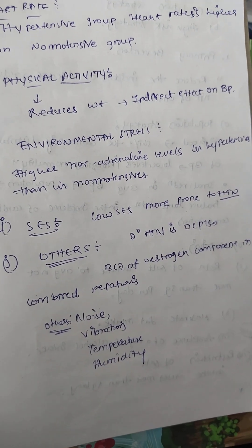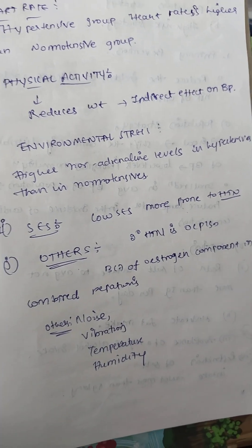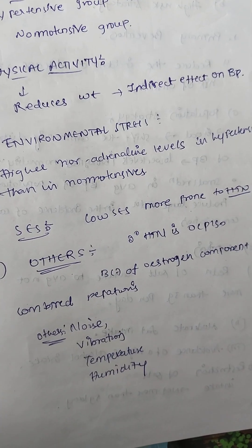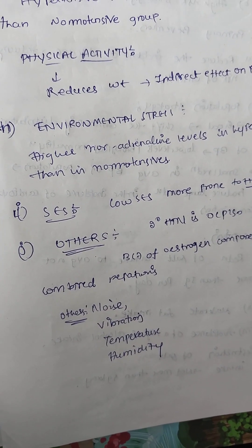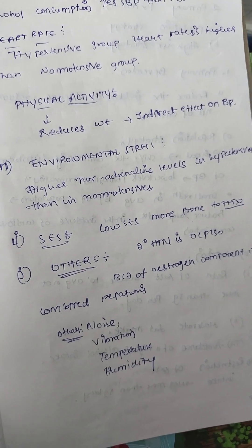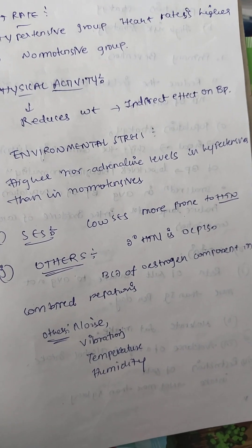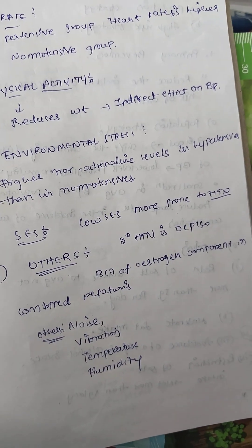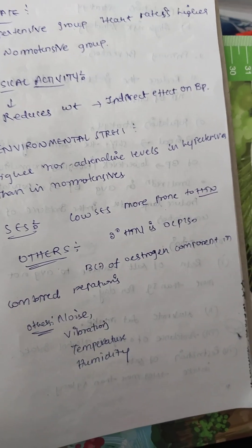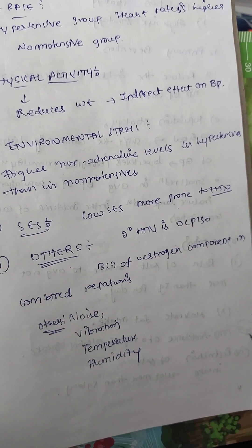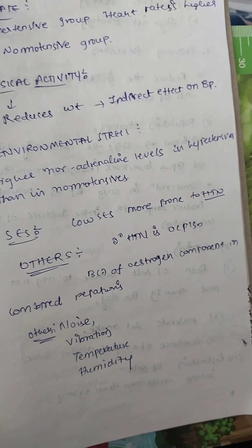Other causes: secondary hypertension occurs with oral contraceptive pills due to estrogen content. Postmenopausal women who take estrogen to prevent osteoporosis also have a high chance of getting hypertension. Other factors include noise, vibration, temperature, and humidity.